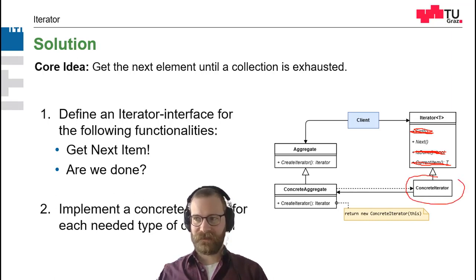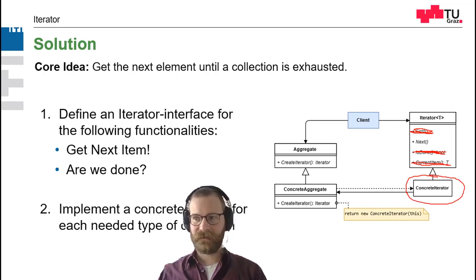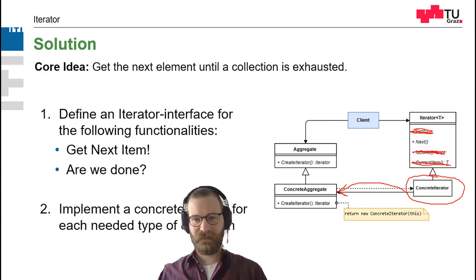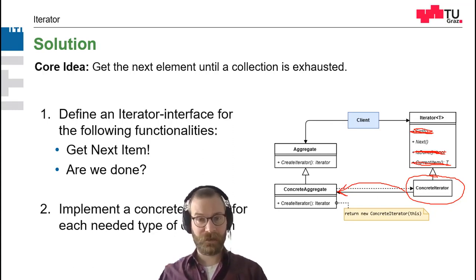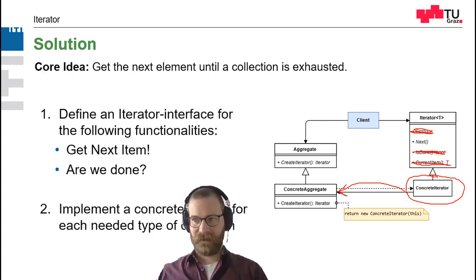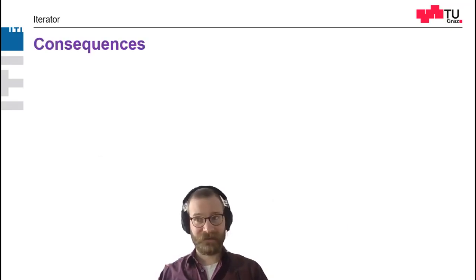We need some concrete implementations. Here we have the concrete iterator. The concrete iterator is specialized to one type of collection — for example, a list, an array, or a tree. In order to get this iterator, we have to implement a create iterator method. Of course, there are different variants.